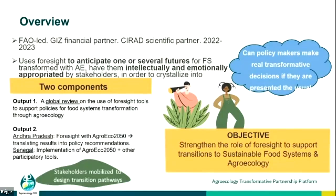For those of you in agroecology who may not be very familiar with what foresight is, I'll give a little overview. Foresight is not about projection — it's about envisaging several possible futures. It's imagining and creating them, so it's being proactive, so that the future will not be business as usual. It involves identifying what the levers are that could make transitions and transformation happen.